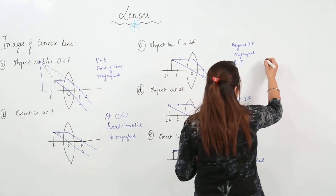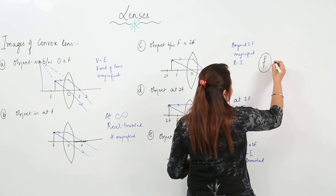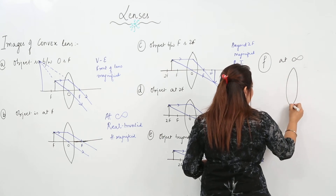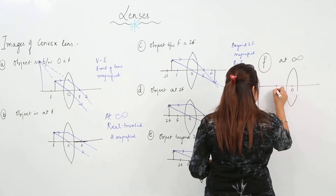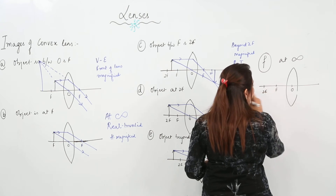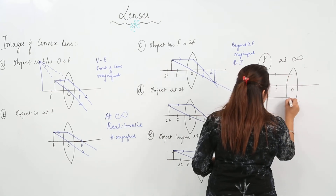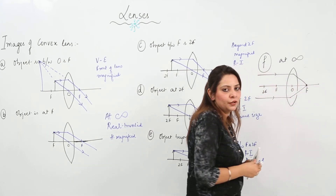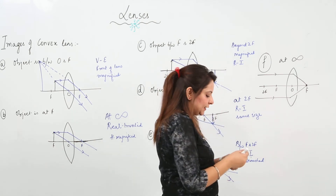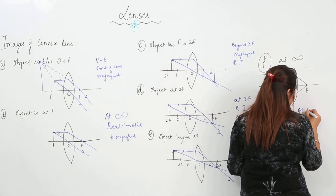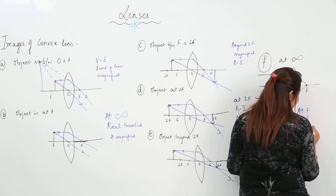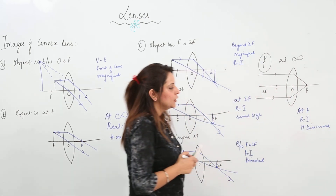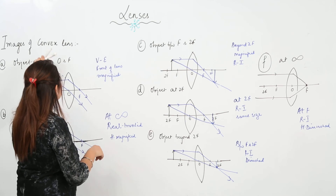The next case is when the object is at infinity. We draw the figure with O, F, and 2F. The rays coming from infinity meet at F, because it is a converging lens. So the image is formed at F — real, inverted, and highly diminished, very small, almost point-like. These are the ray diagrams for the images of the convex lens.